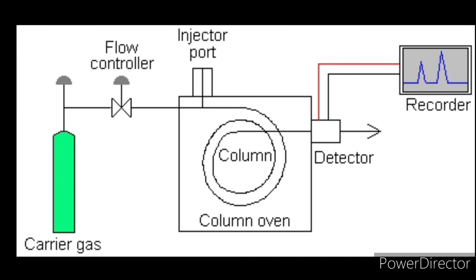Now we have detectors. The function of detector is to sense and to measure the separated components in carrier gas flow leaving the column. The choice of detector depends on the nature of the sample and the level of analysis. What are the types of detectors used in gas chromatography? First is flame ionization detector, also called FID. Second is thermal conductivity cells, also called TC cells. And third is electron capture detectors.